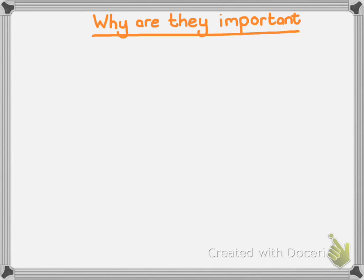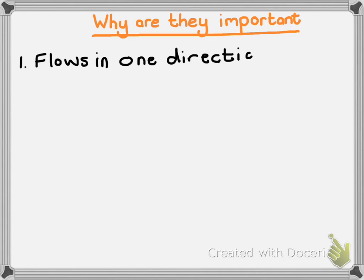Please take note of these — they are at the bottom of page 137 and cover why synapses are important. The first reason is that the direction of flow happens only in one direction. This is significant because you don't want a message to bounce backwards and forwards within the synapse. You want it to go from the dendrite along the axon to the axon terminals, and then into the dendrite of the next neuron.